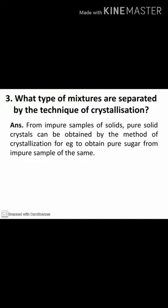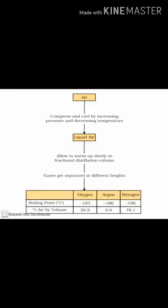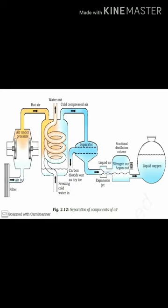Air is a homogeneous mixture and can be separated into its components by fractional distillation. First, compress the air by increasing pressure and decreasing temperature to get liquid air. Then allow it to warm up slowly in a fractional distillation column. Gases get separated at different heights because different gases have different boiling points.